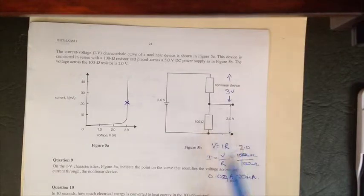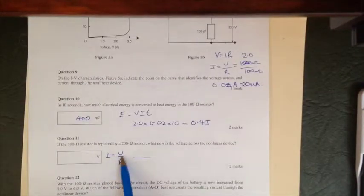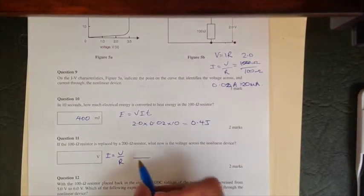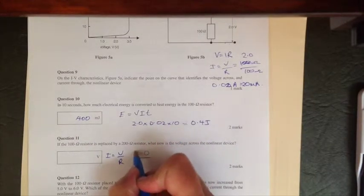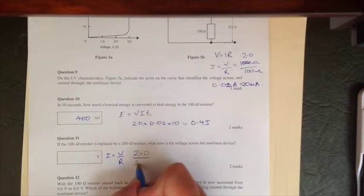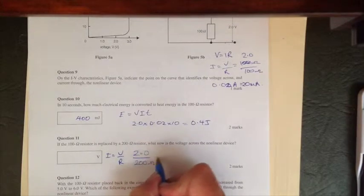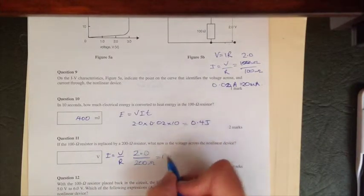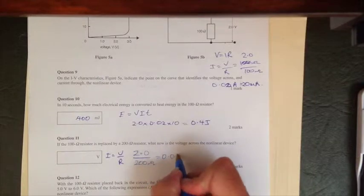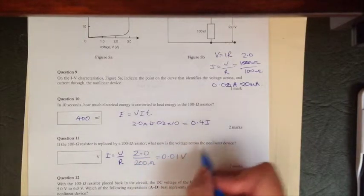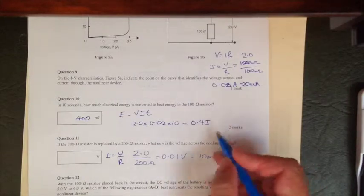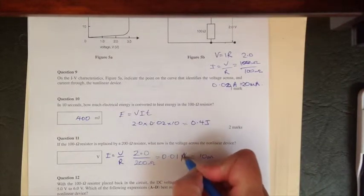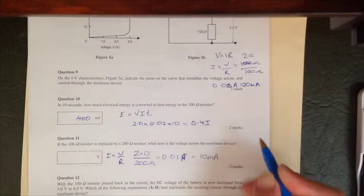So now substituting this, we're going to use I equals V/R again, but this time around we've still got two volts on the top, but we've got 200 ohms on the bottom, which is going to give us 0.01 of an amp—sorry, amps—which is the same as 10 milliamps.